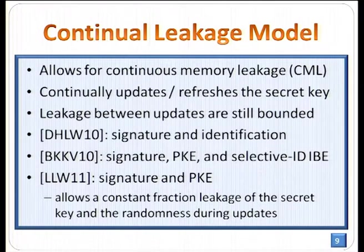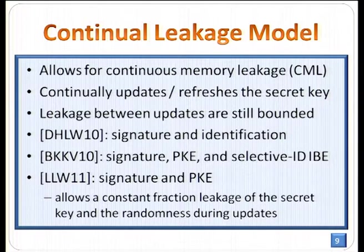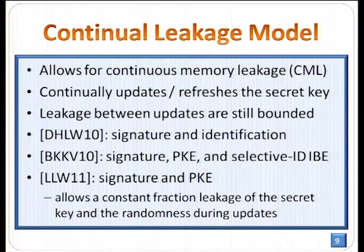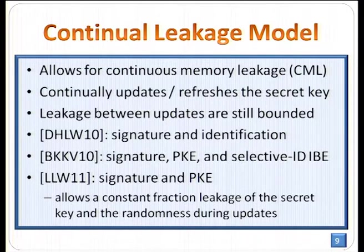The second half of the open question is about continual leakage. It means the user will continually update or refresh their secret key, and the adversary is allowed to obtain leakage in each period of time. Leakage between updates is still bounded, but overall, in the long run, the total number of leakage bits is unbounded. There are quite a lot of works in this model covering signatures, identification, public-key encryption, and so on.